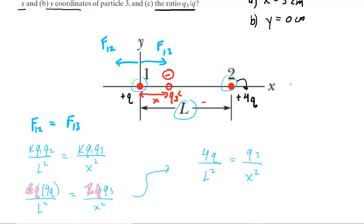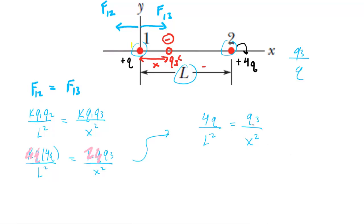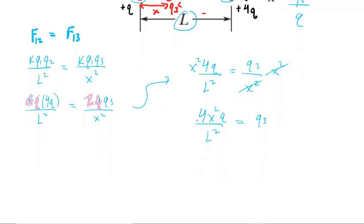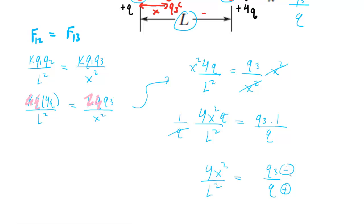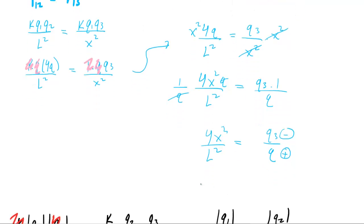We want the ratio Q3 over Q, so we do algebraic manipulation. Multiplying both sides by x squared gives 4x squared Q over L squared equals Q3. Then multiplying both sides by 1 over Q, the Q's cancel, leaving 4x squared over L squared equals Q3 over Q. However, be careful: Q is a positive charge and Q3 is negative, so this ratio necessarily comes out negative: negative 4x squared over L squared.